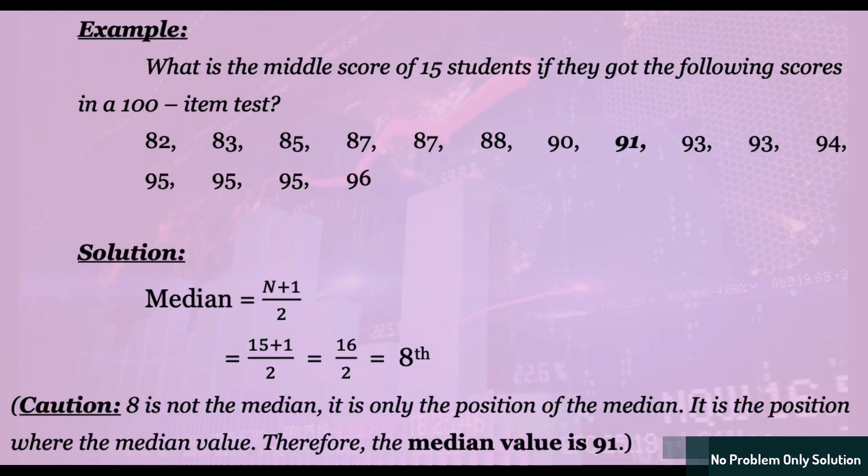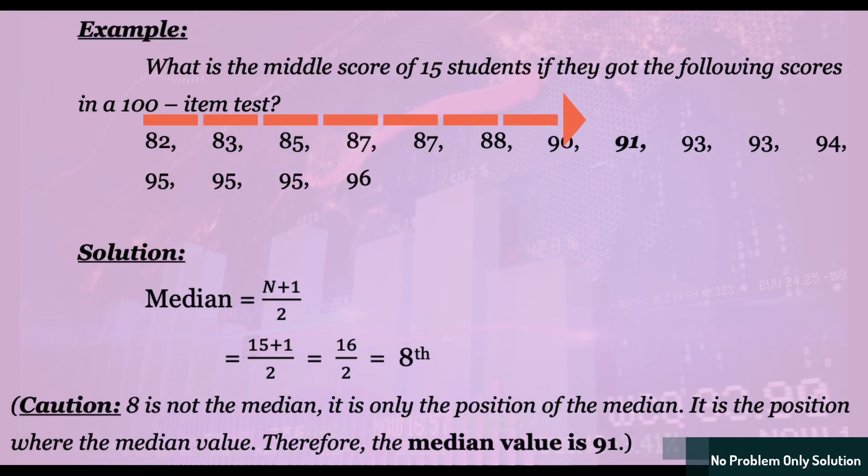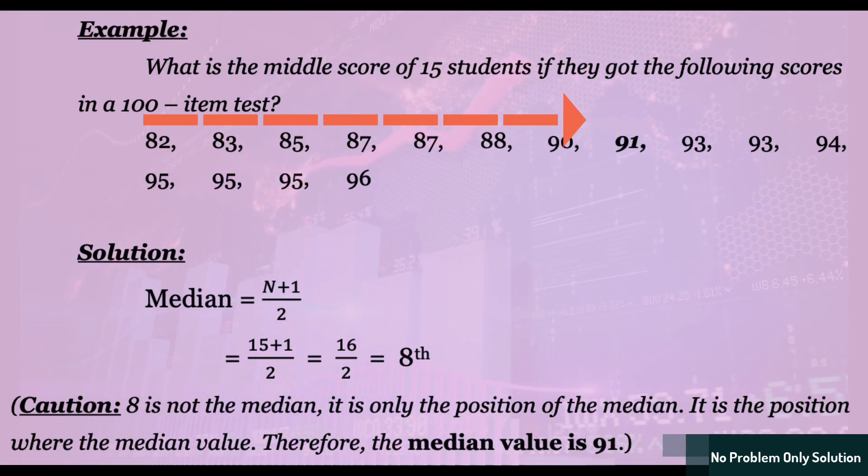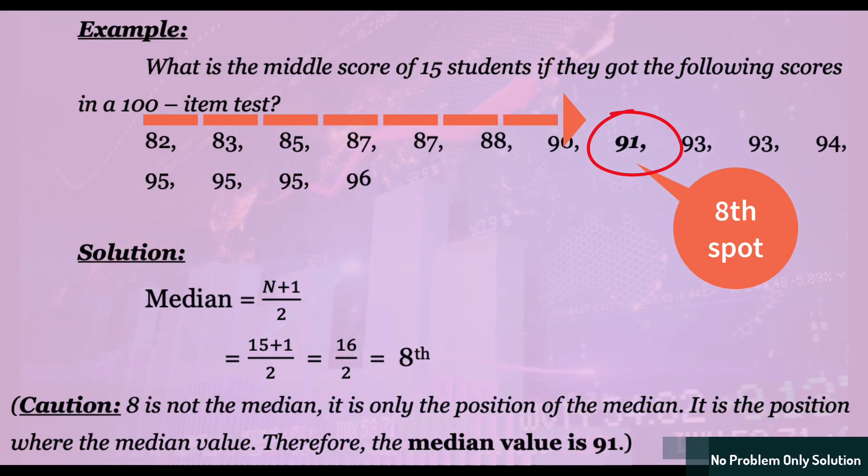So, let's do that right now. We go back to our nice, ordered list of scores, and we count 1, 2, 3, all the way to the 8th spot. And what number is sitting there? It's 91. And that is our median. The true middle score.